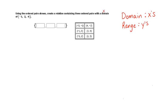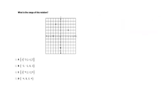Since it's domain, we want our x-coordinates to be negative 1, 2, and 4. First I'm going to pick the ordered pair that has a negative 1 as its x-coordinate — that's negative 1, 0. Then I pick the pair with 2 as my x-coordinate: (2, 3). Then I pick the one with 4 as my x-coordinate: (4, negative 2). If we're creating a relation with a domain of negative 1, 2, and 4, those three must be represented in our ordered pairs.